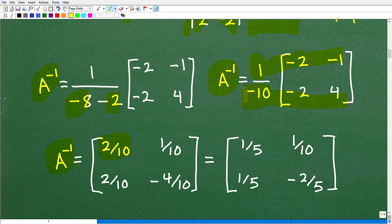Okay, so anyways, when I distribute this 1 over negative 10, I get 2 tenths. I get another 2 tenths here. I get 1 tenths, and I get a negative 4 tenths. And then I can reduce that down. I get 1 fifth, 1 fifth, 1 tenth, and negative 2 fifths. And this is my inverse matrix. Okay. All right. So that is the answer.